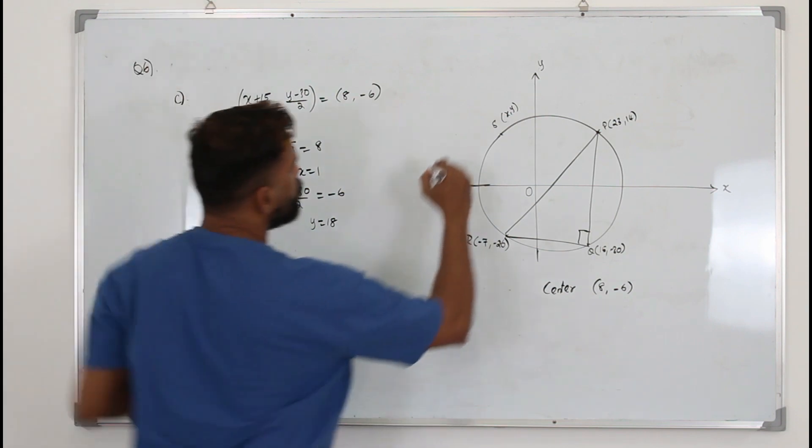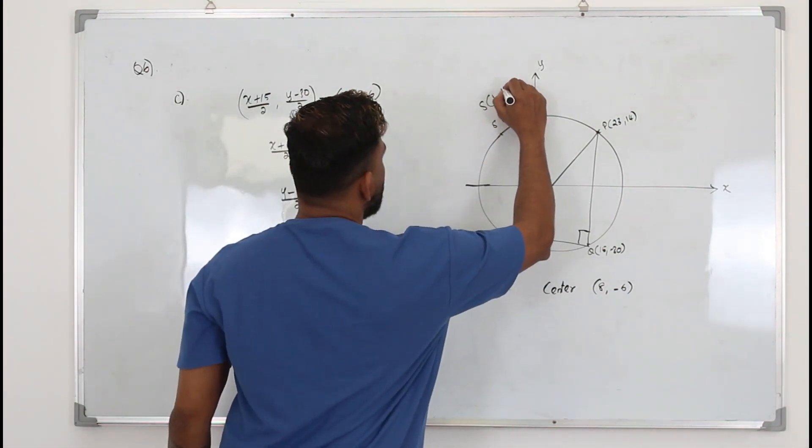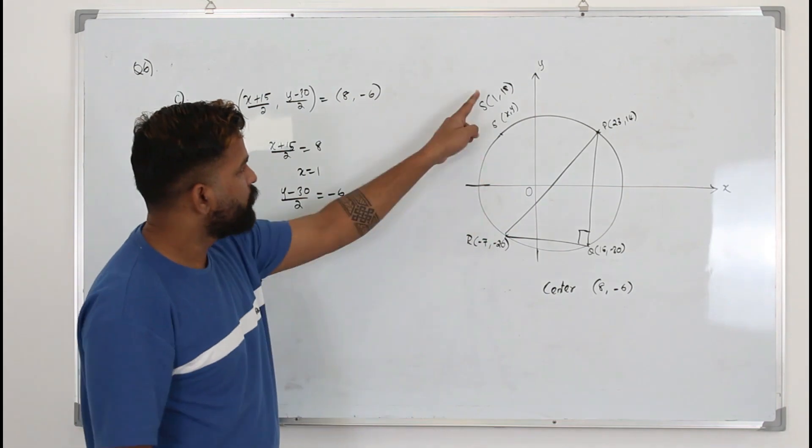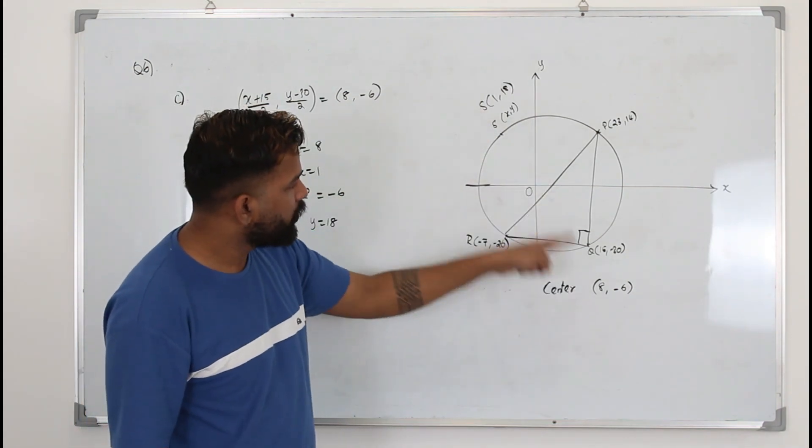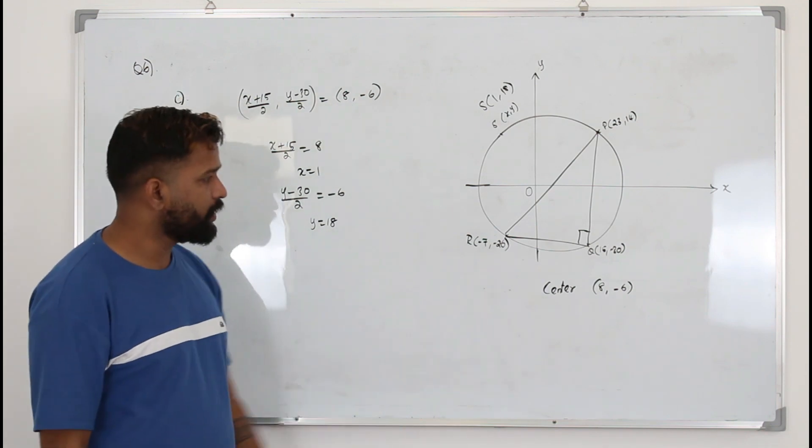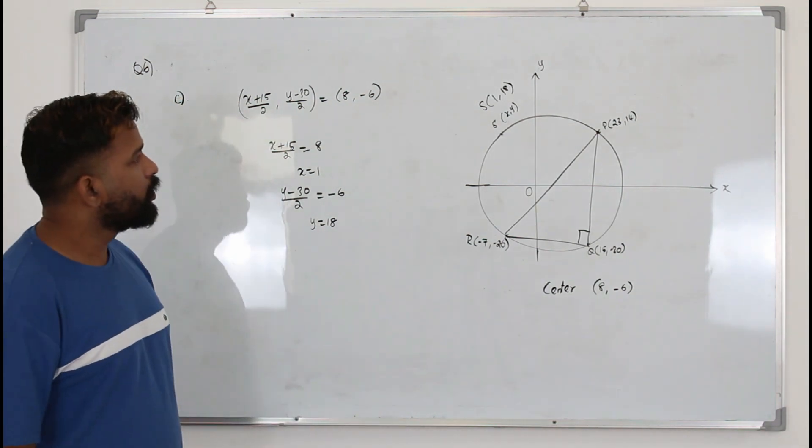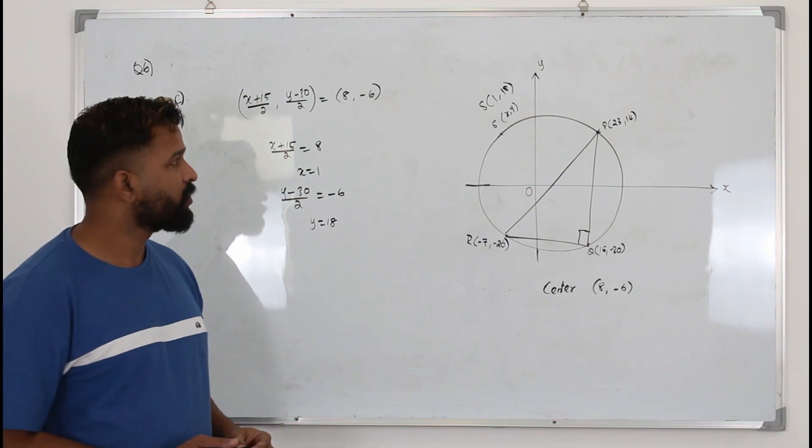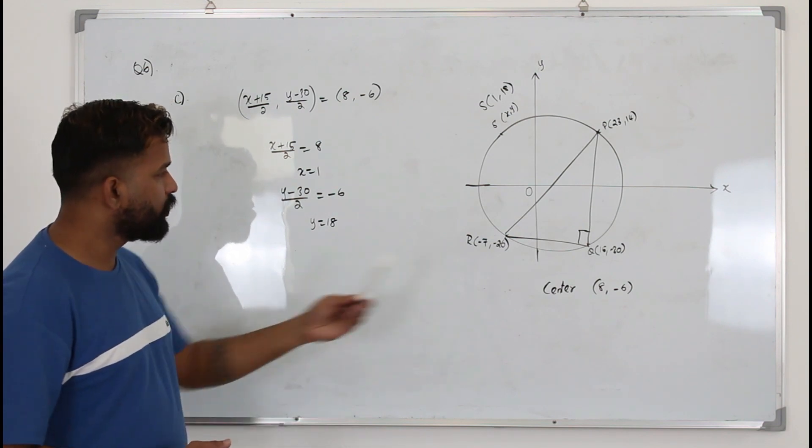So the point S will be 1 comma 18. Because if it's 1 comma 18, the midpoint will be 8 comma negative 6. You know the point already now, and you know the center.